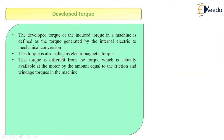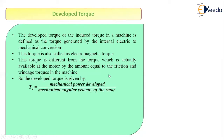The developed torque, which is nothing but electromagnetic torque, is very different from the actual torque at the output of the motor. The difference is that from the torque actually available at the motor, by the amount equal to friction and windage torques of the machine. So, we can derive the formula for the developed torque as Td — representing developed torque — is equal to the ratio of mechanical power developed to the mechanical angular velocity of the rotor. Hence, we can write: Td = PMD / ωr. Let this be equation number 1.